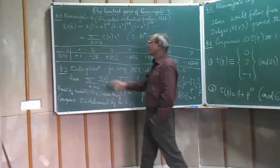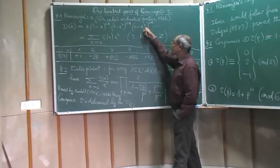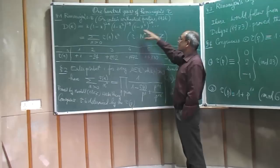So how is it defined? You take this formal power series, delta of x, which is x times (1 minus x) to the power 24, times (1 minus x squared) to the power 24, times (1 minus x cubed) to the power 24, and so on.